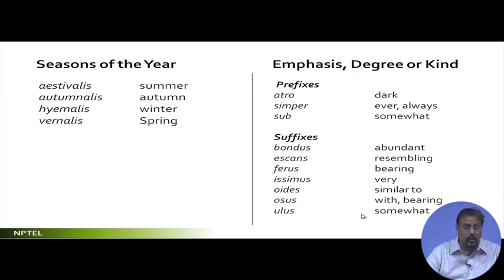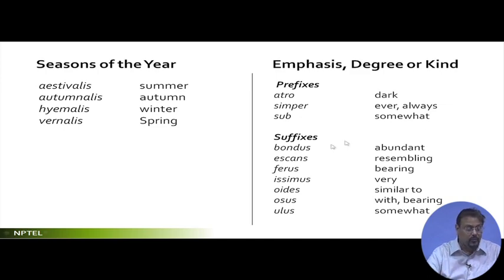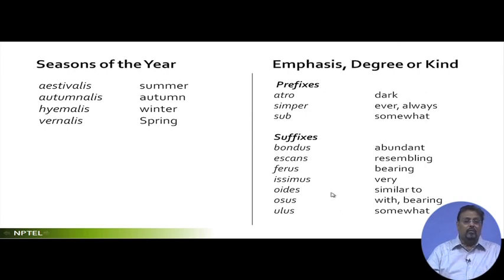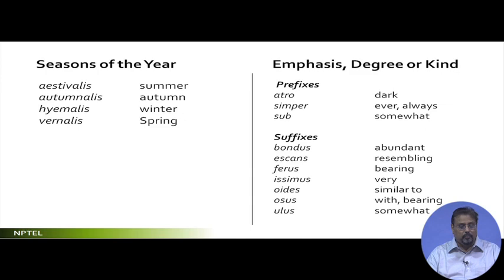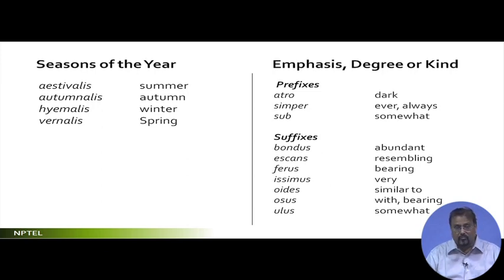Basically, if you find a name which has one of these as a suffix in the second part, try to find it in this list to understand what it represents. This entire list is given in the famous book by Gordon Halfacre called Horticulture. I would advise all of you to read that particular book — a wonderful book to know about plants in great detail. I believe it was published around 1979 or 1980.